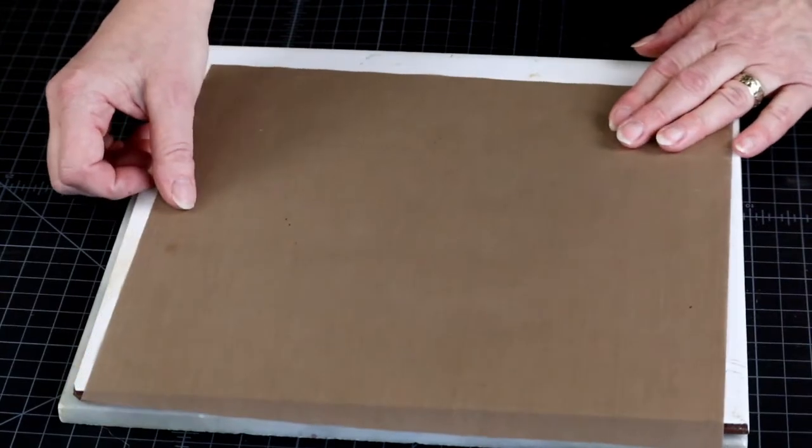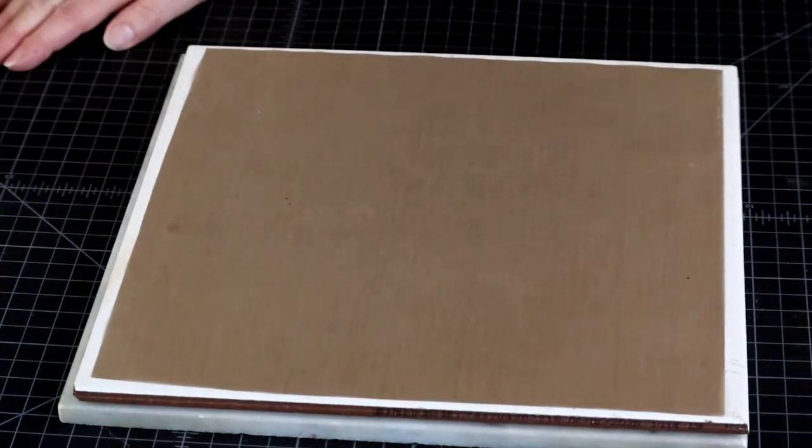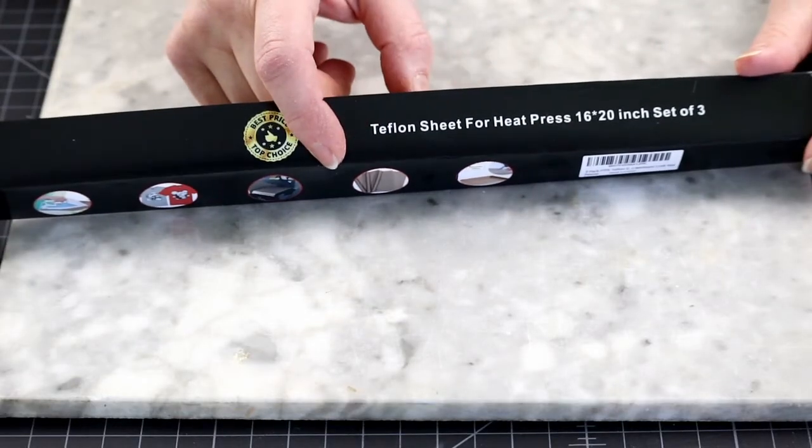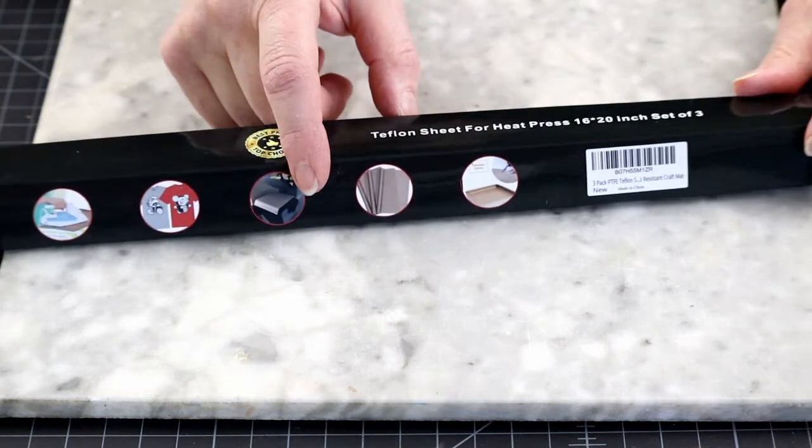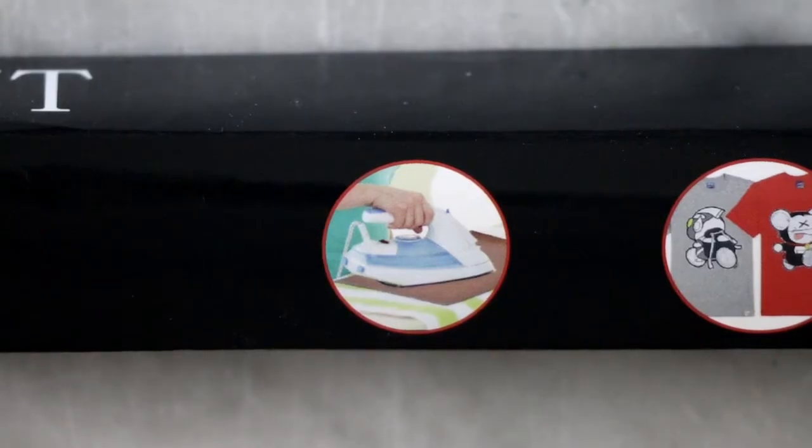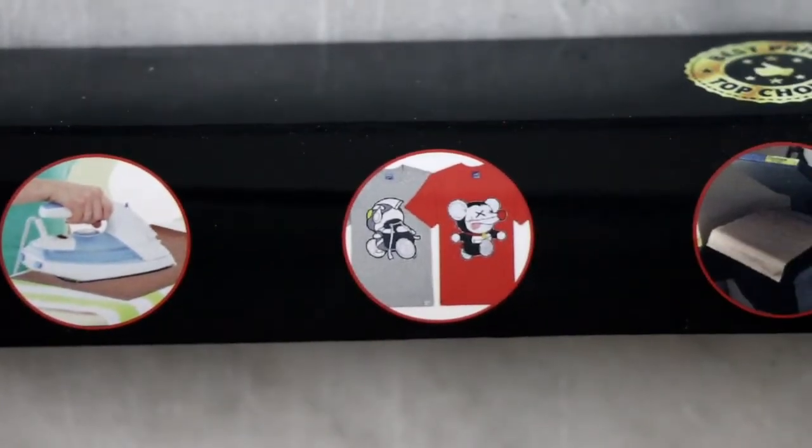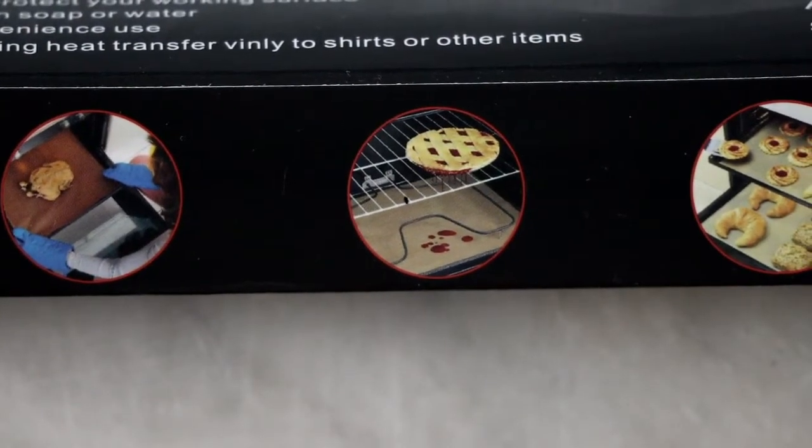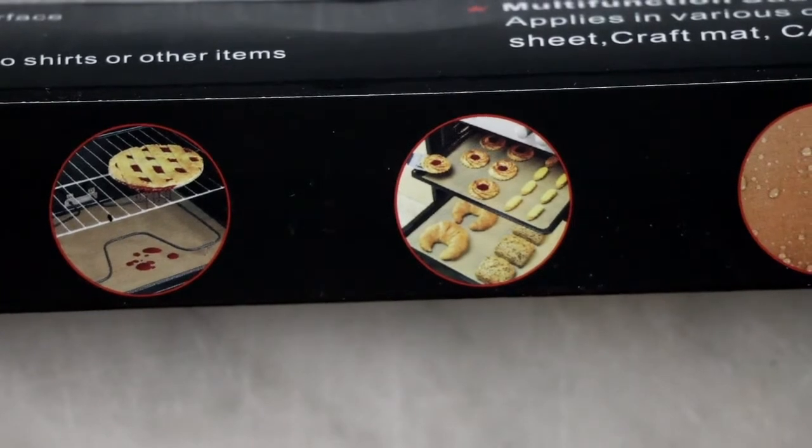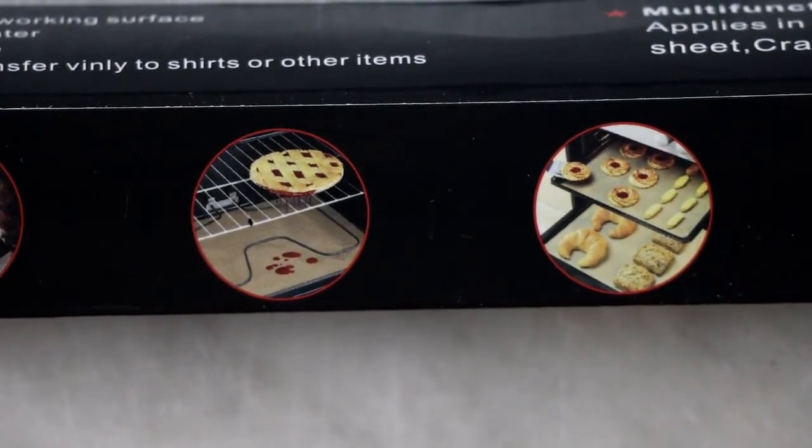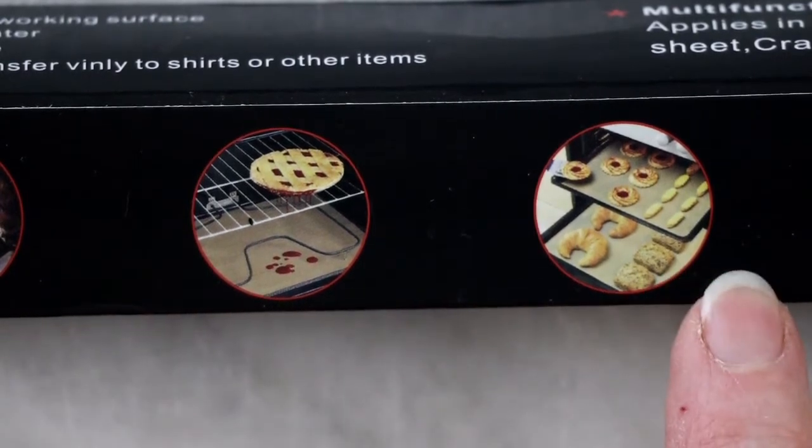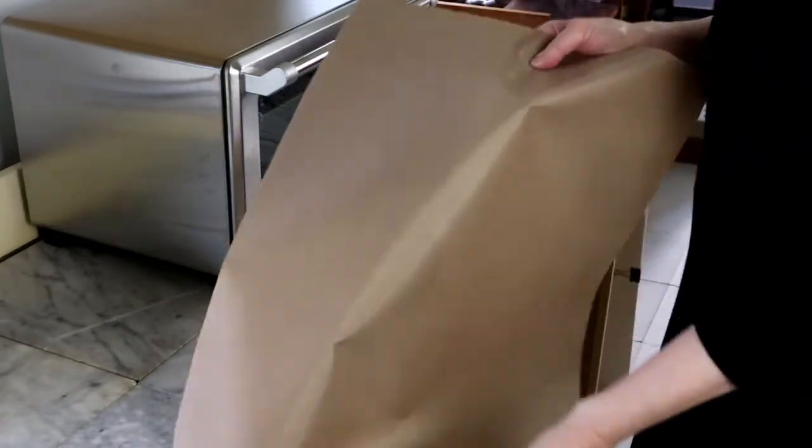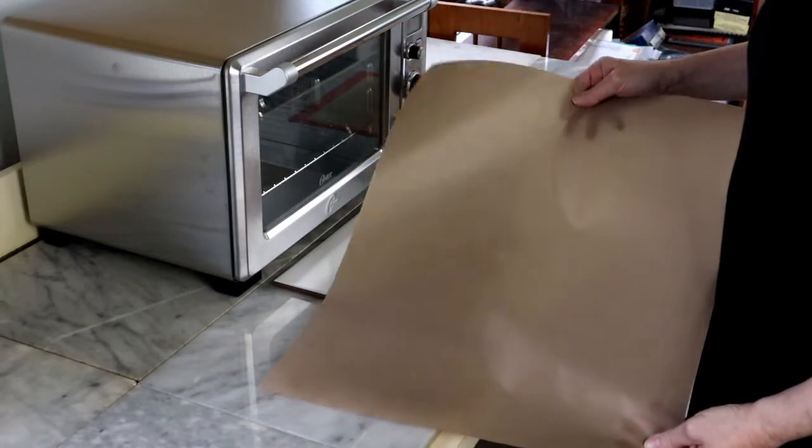Then I met Teflon sheets. We met online and it was love at first bake. Here is what the box looks like in case you want to look for them. I will also leave a link in the description. These were made for t-shirt decal transfers and are also sold for ironing and even food baking, oven lining. Definitely look heat resistant here. And yes, also for baking cookies. So food safe. Therefore user friendly.